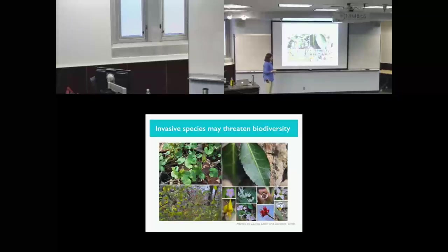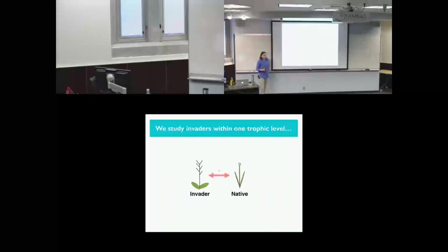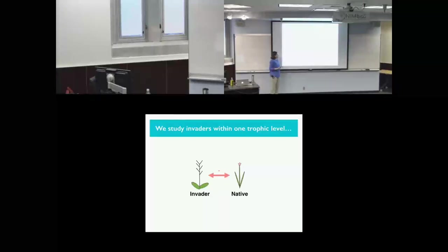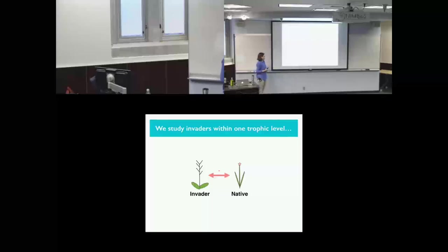In my system where I studied forests in Indiana and in southern Connecticut, we see invaders like garlic mustard, bush honeysuckle, and purple winter creeper. We're concerned with these species because we think they may suppress native biodiversity by out-competing the native plants we like to see in our forests. As a plant ecologist, when I study invasion, I tend to start off by thinking about one trophic level.